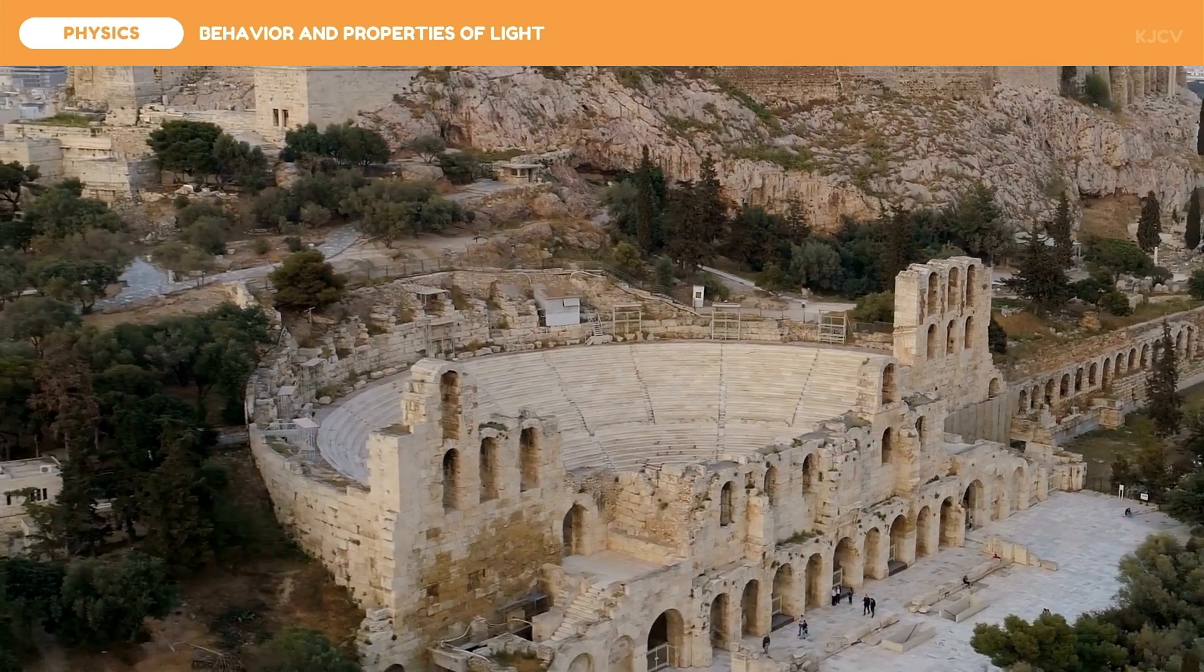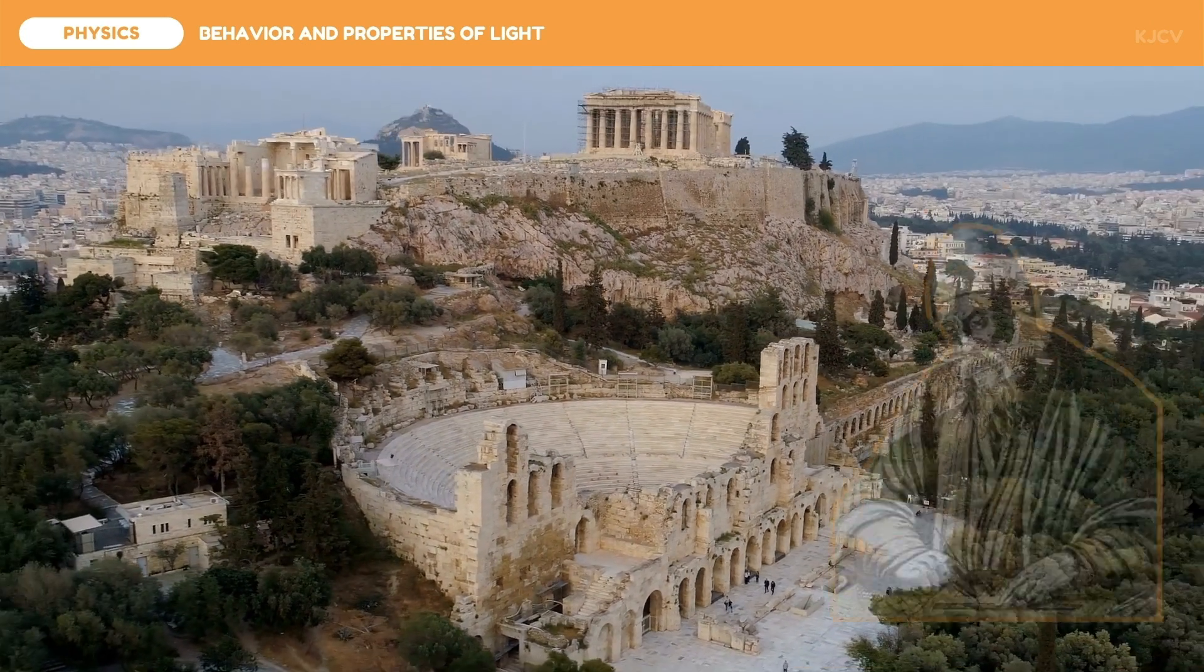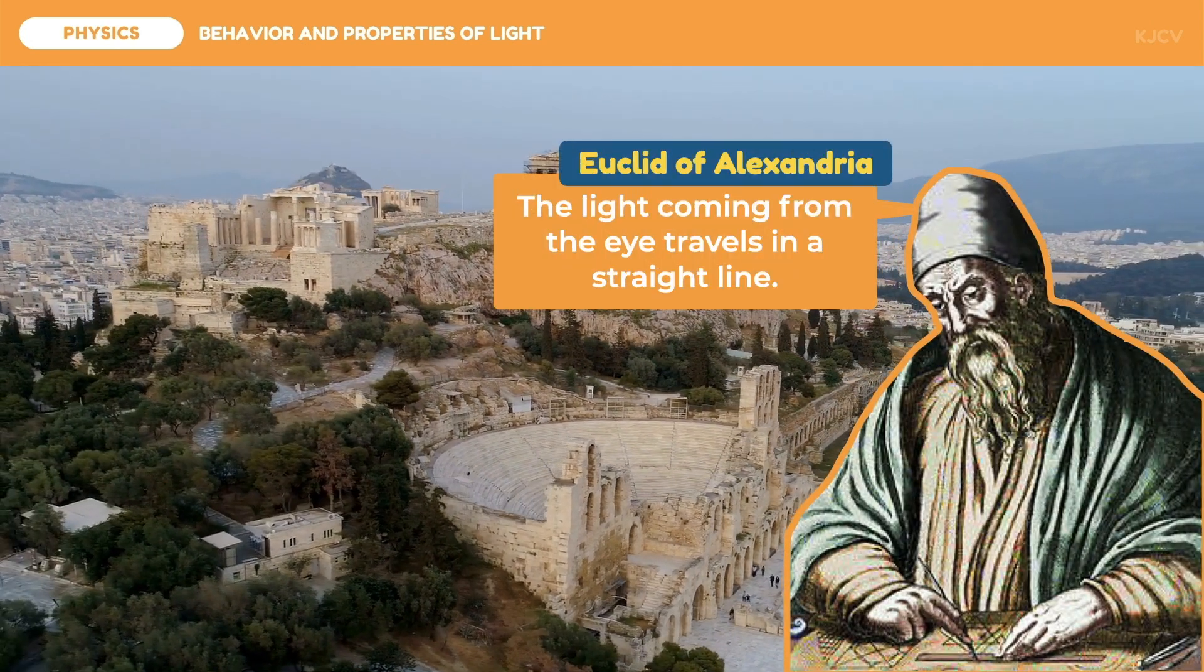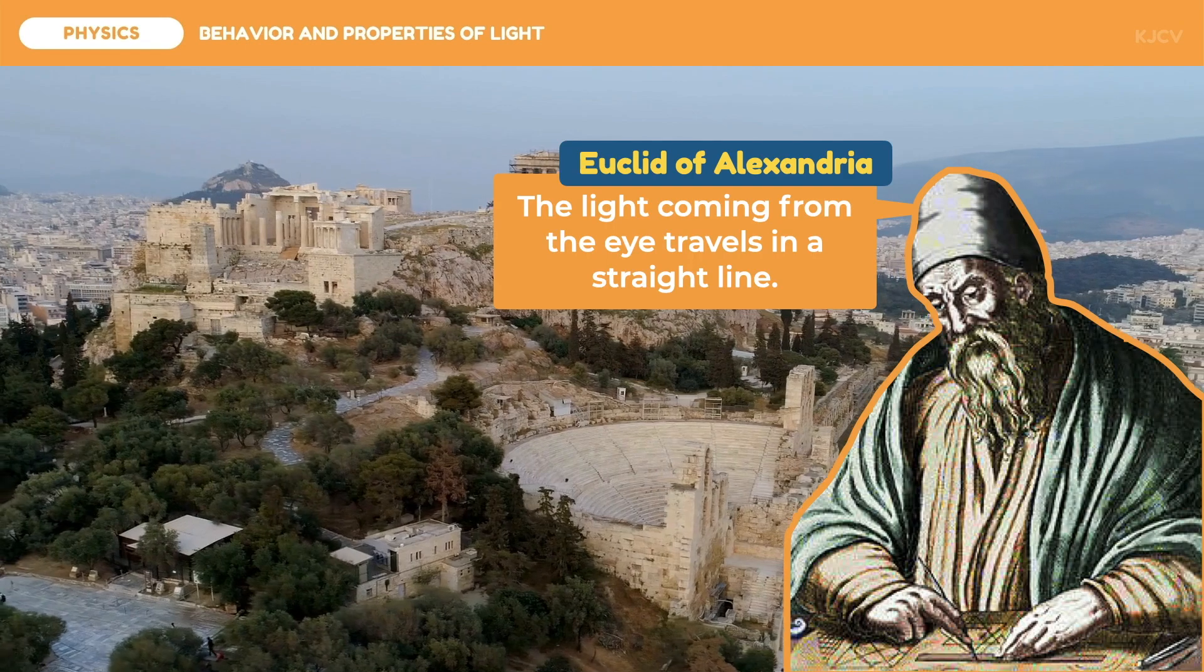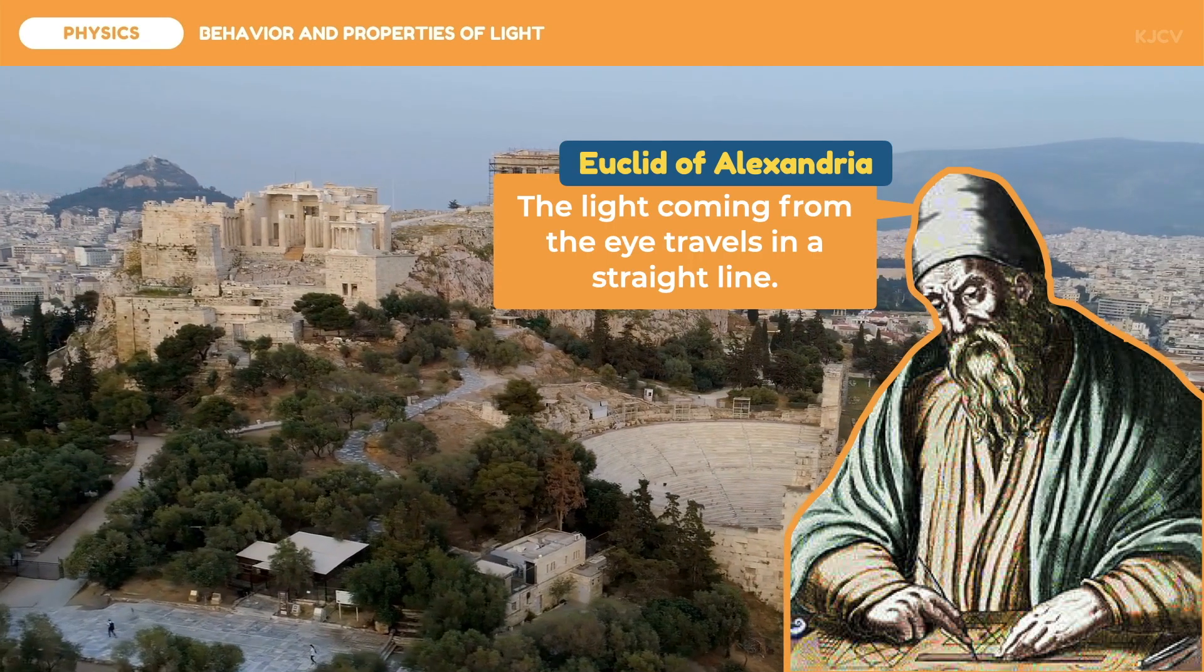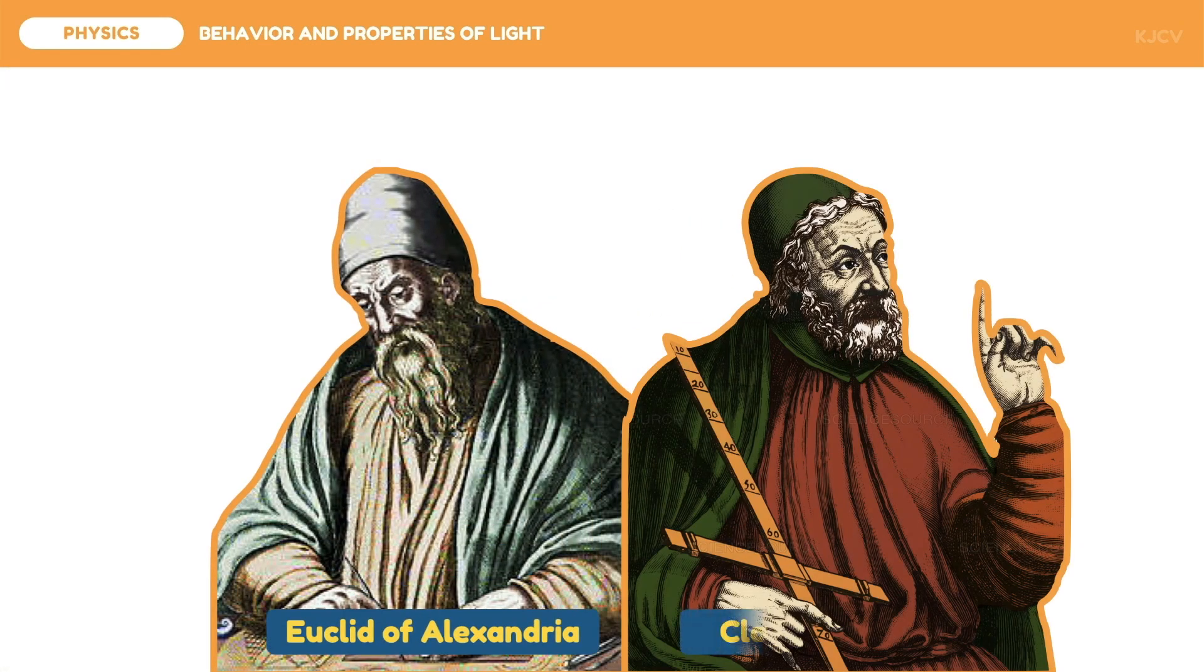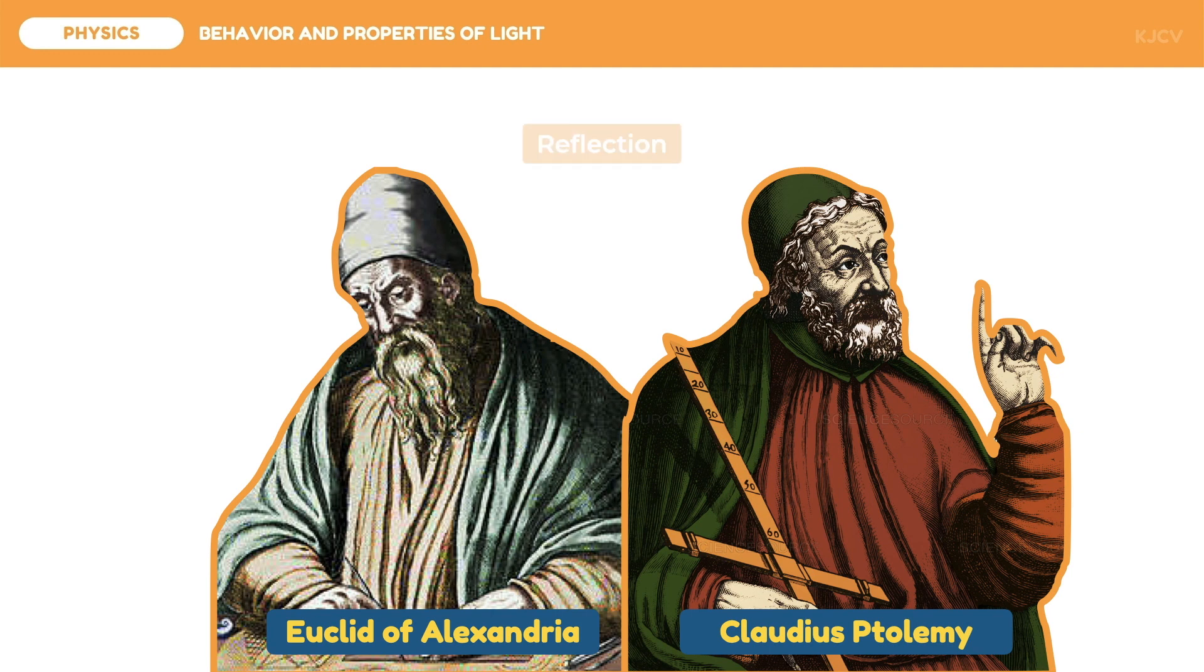The curiosity of people and light started during the ancient times. Euclid from Alexandria explained that light coming from the eye travels in a straight line. He believed that vision emanates from the eye. Aside from Euclid, Claudius Ptolemy contributed knowledge on what light is. The two studied two different light phenomena: reflection and refraction. However, only limited knowledge to even no knowledge at all about the composition of light was available during these times.